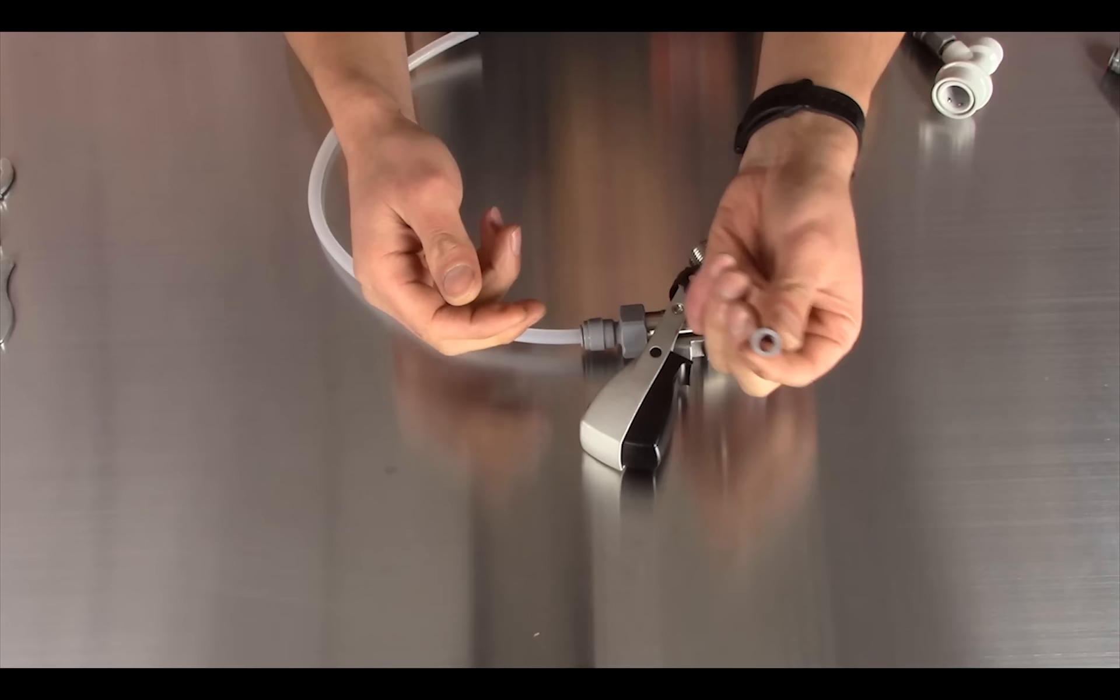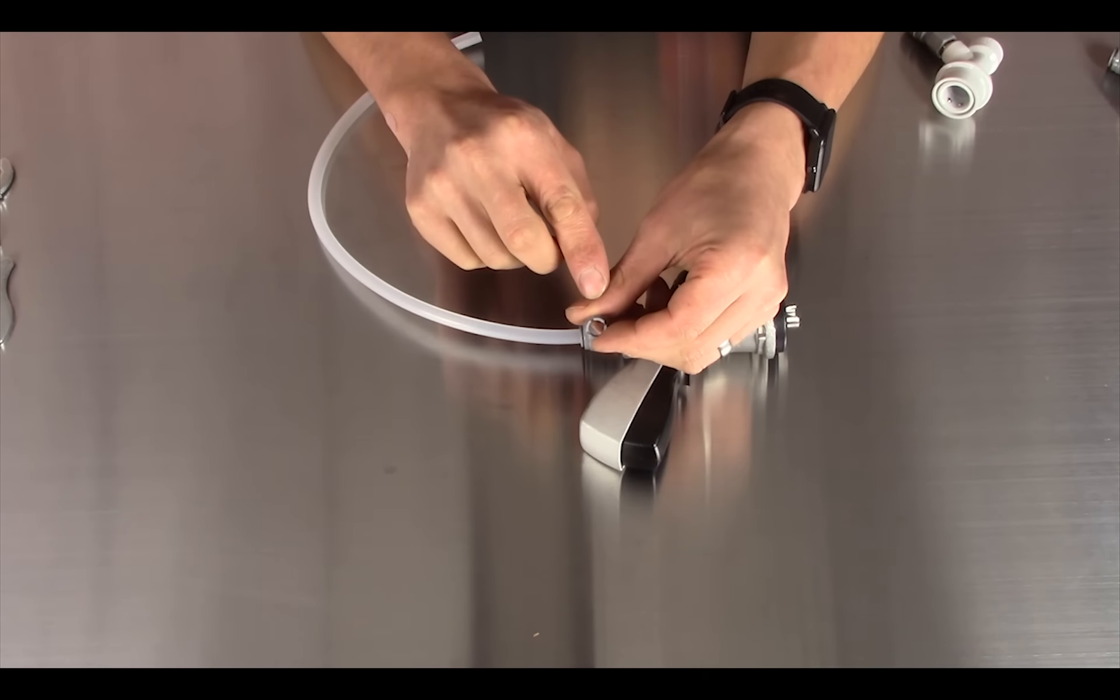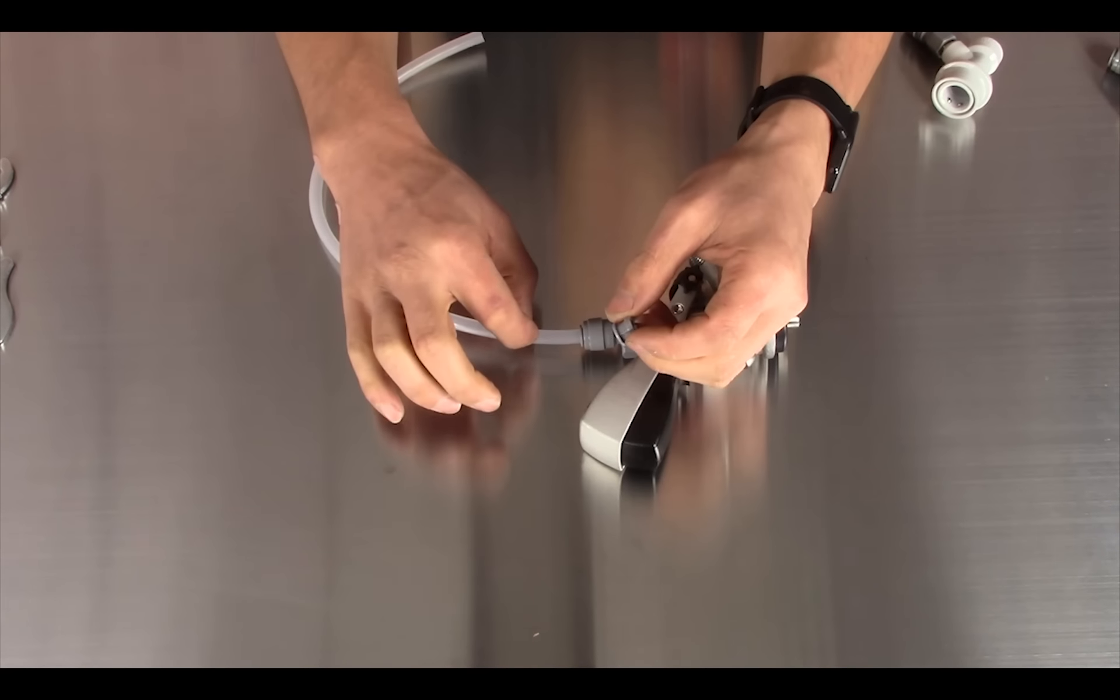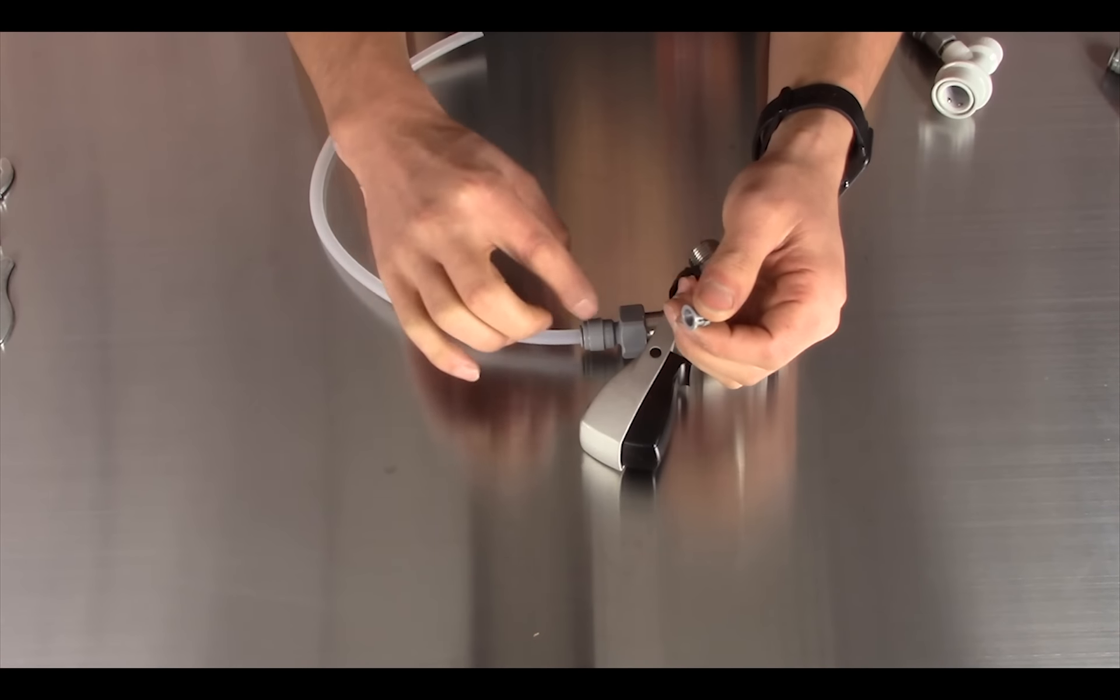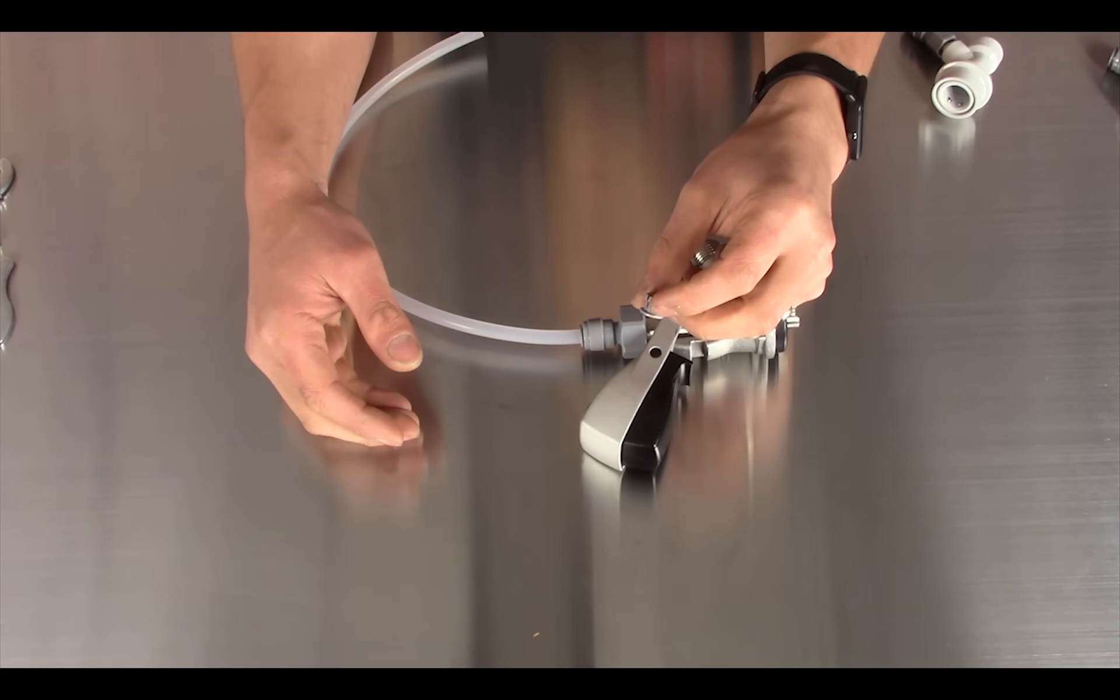Once you push the hose into the push-in fitting the collet, which is this bit here, sits in all the push-in fittings. It's got like stainless steel teeth, you can see four little stainless steel teeth in there and they grab onto the outside of the line and that's what holds the line into the push-in fitting really securely.